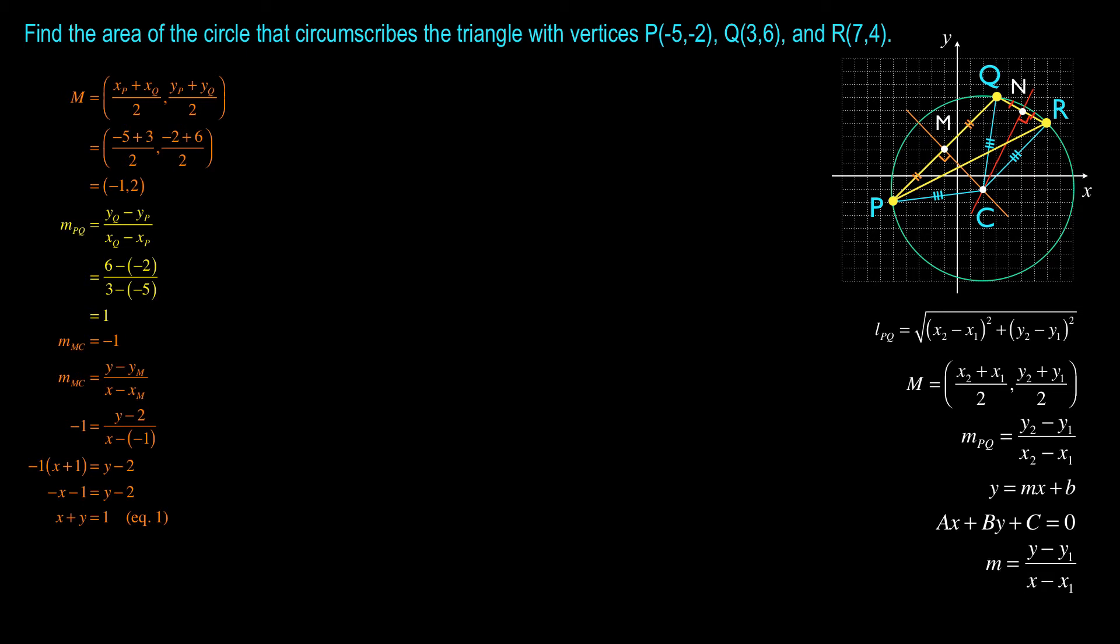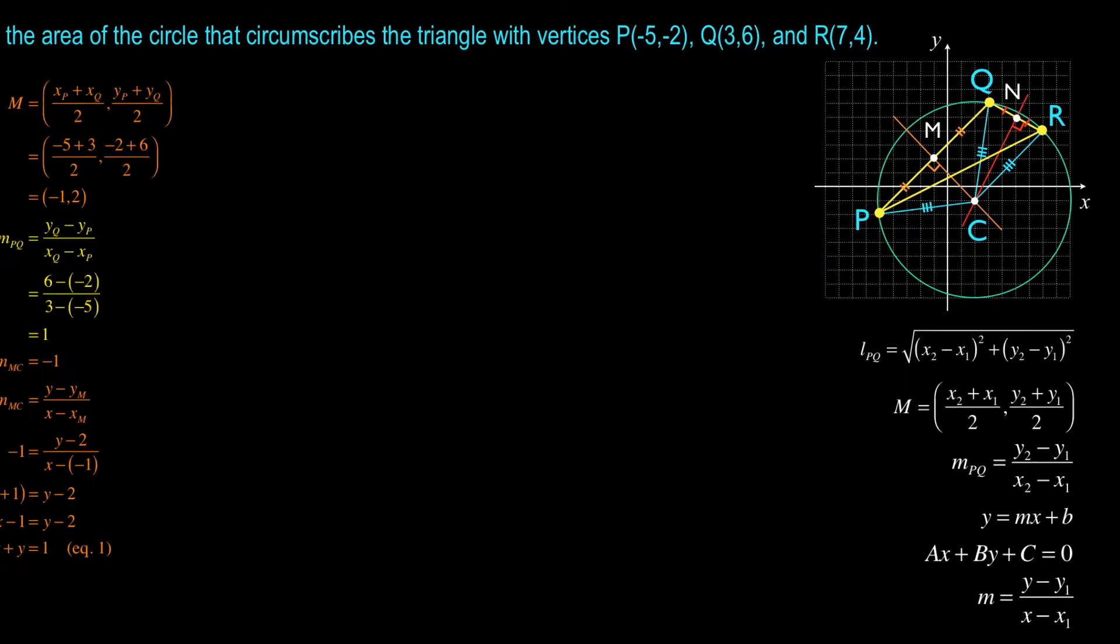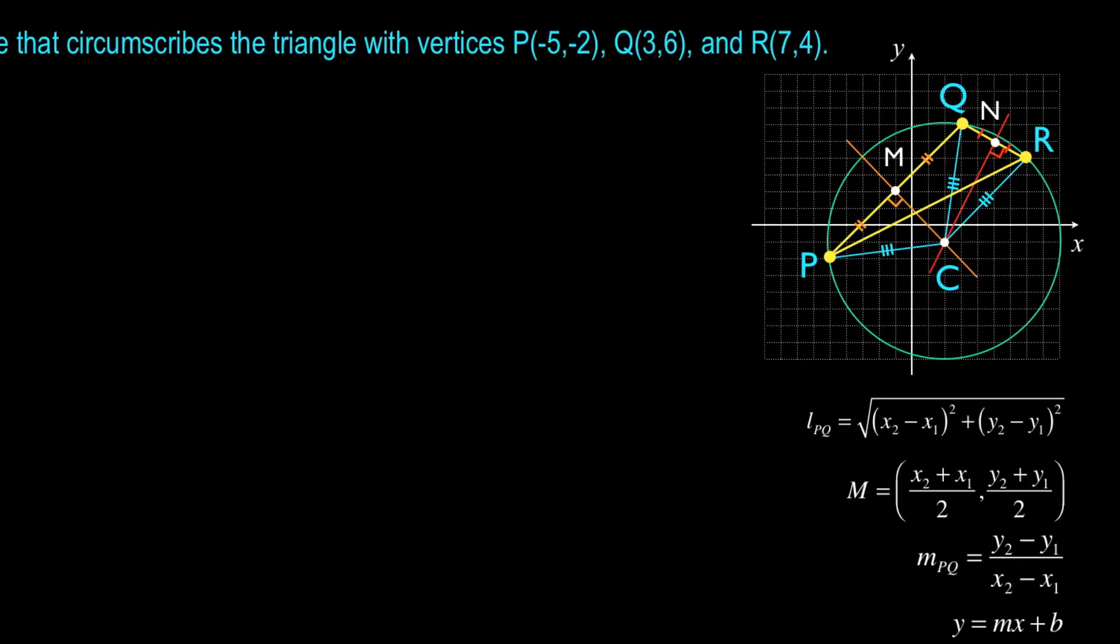The next step is to repeat the entire process again for the right bisector to QR. In other words, that line through N and C that is perpendicular to QR. Now, I would suggest that you pause the video, try it entirely yourself and verify that you get the same answer that I get. So here come my answers.